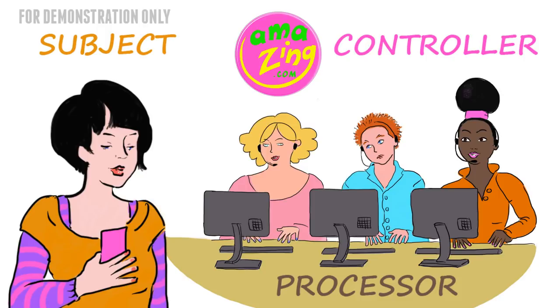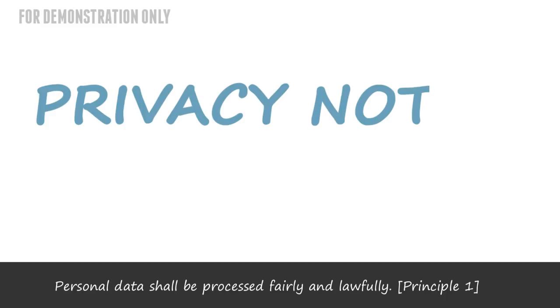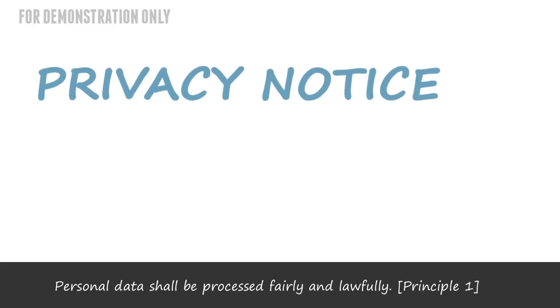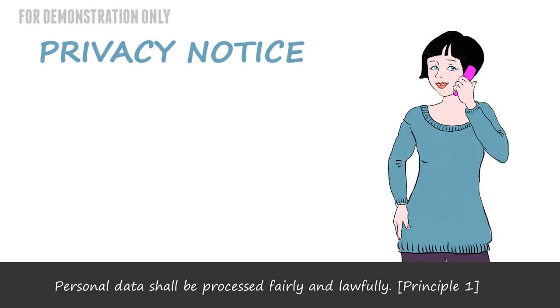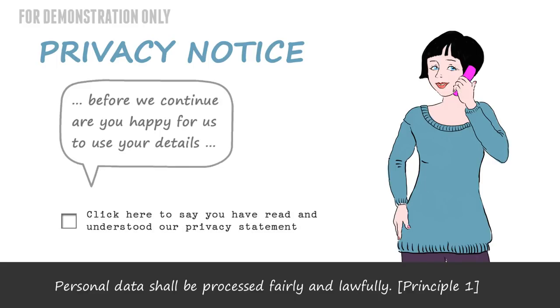Now, there are some data protection principles. An important part of processing data fairly and lawfully is the privacy notice. This, at a minimum, tells the data subject how their data will be used and asks for their consent to use it. Laura remembers being asked for her consent when she called up about her car insurance, and also there was a checkbox on the web application for a building society account.